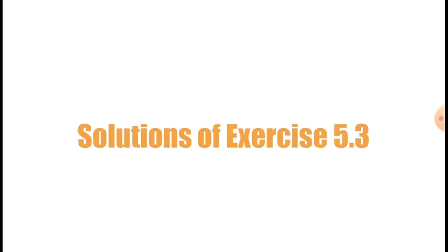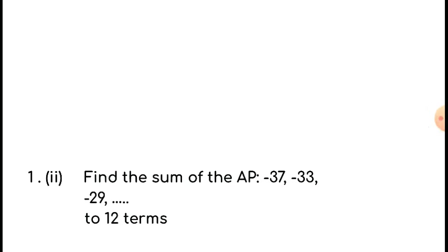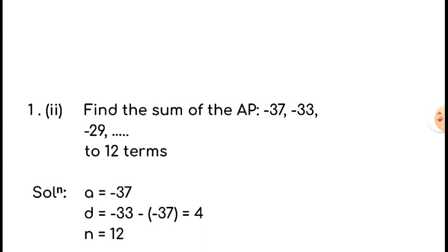Let us come to the solution of exercise 5.3. I have selected a few problems from this exercise. Question number 1, part (ii): find the sum of the arithmetic progression whose terms are minus 37, minus 33, minus 29, and so on, up to 12 terms. We have to find the sum of this AP up to 12 terms. Since the terms are already given as an AP, we can proceed directly to the formula.